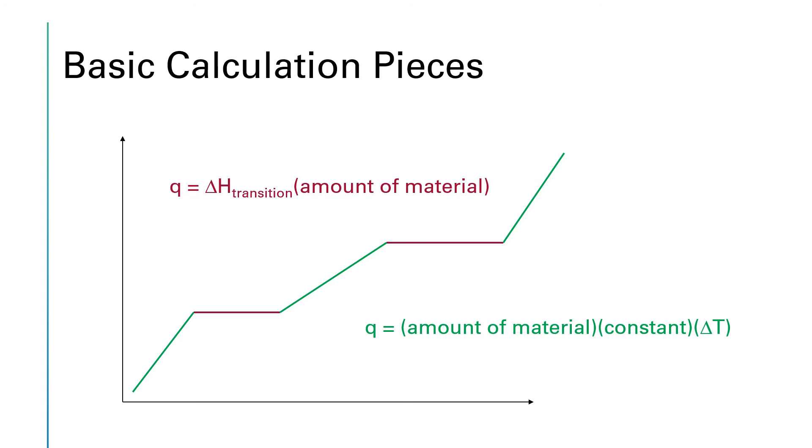On this slide, I'm just trying to say the same thing one more way. If we're talking about the phase transitions, these are the horizontal plateaus, then Q for these phase transitions will be given by ΔH of the transition multiplied by the amount of material. And then if we are talking about the slanted portions, on the slanted portions we have just a single phase the whole time, no phase transitions, but these single phases are changing their temperature. And so for these single phase regions, we're going to take the amount of material and multiply it by that constant, and then multiply all of that by the change in temperature.